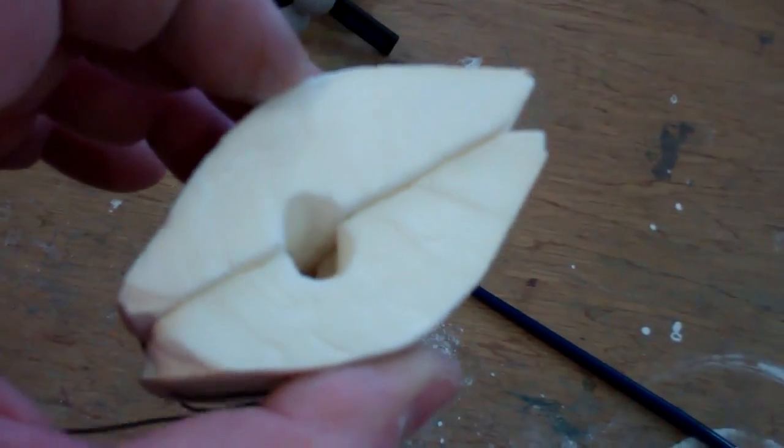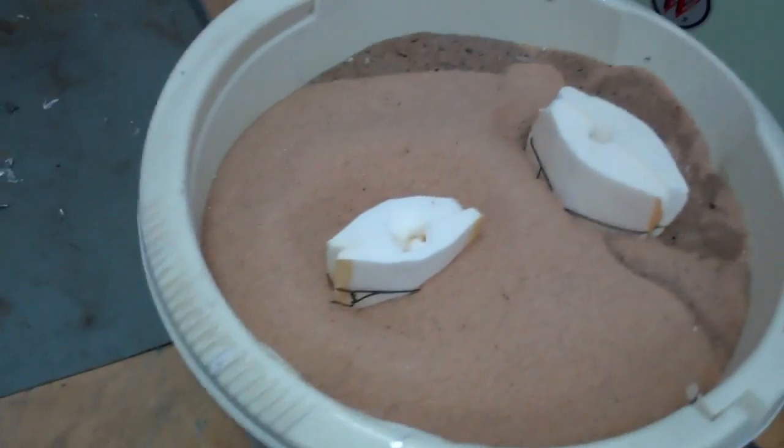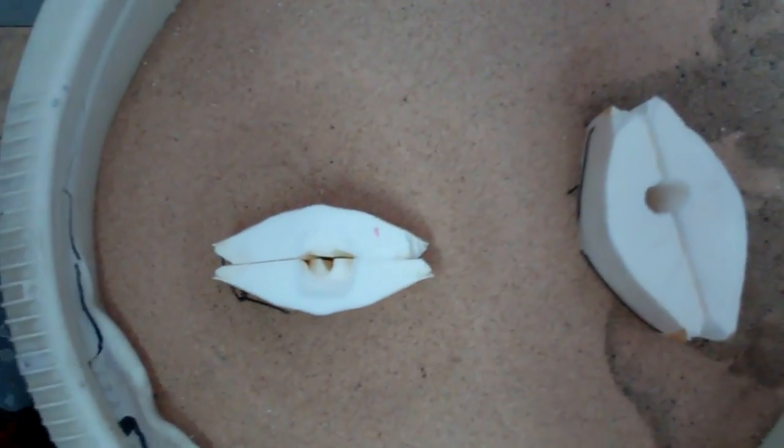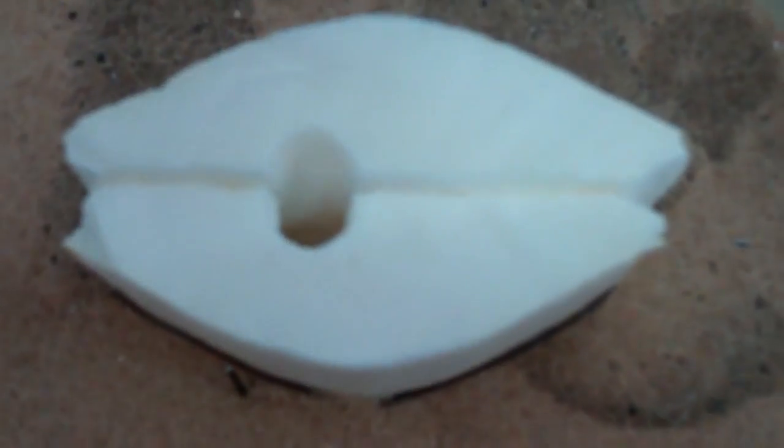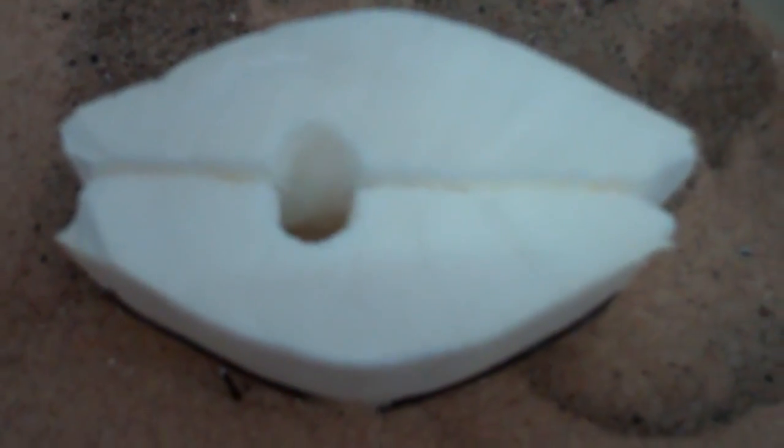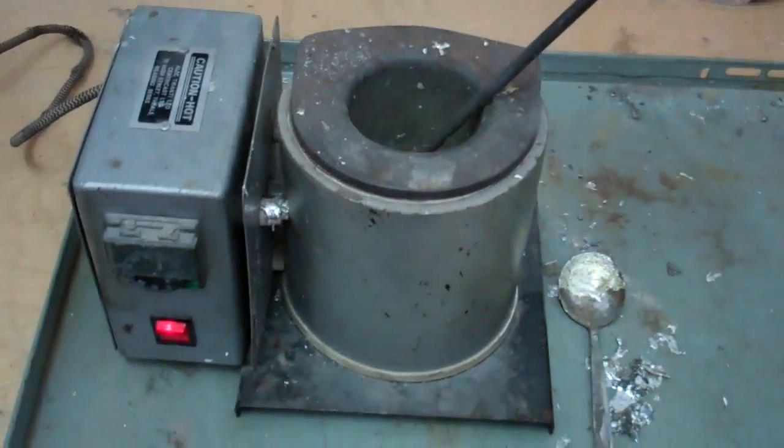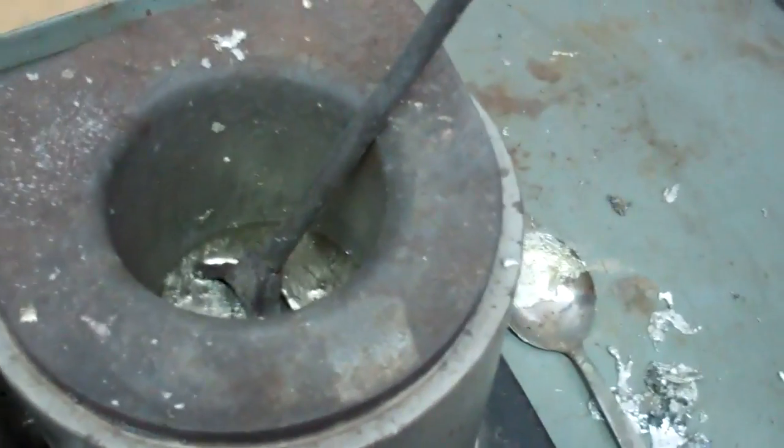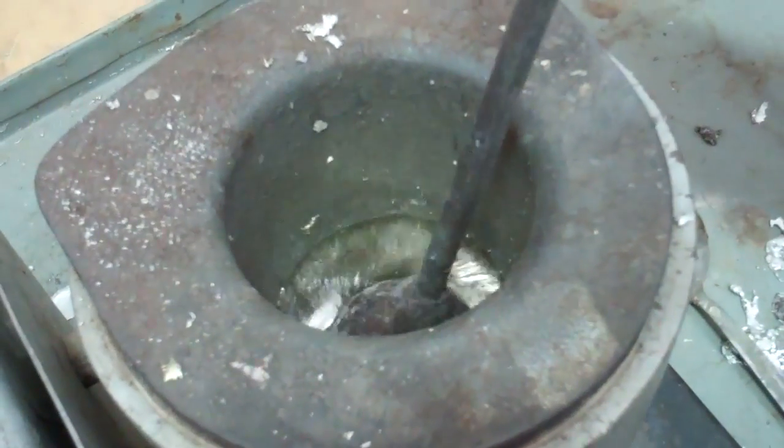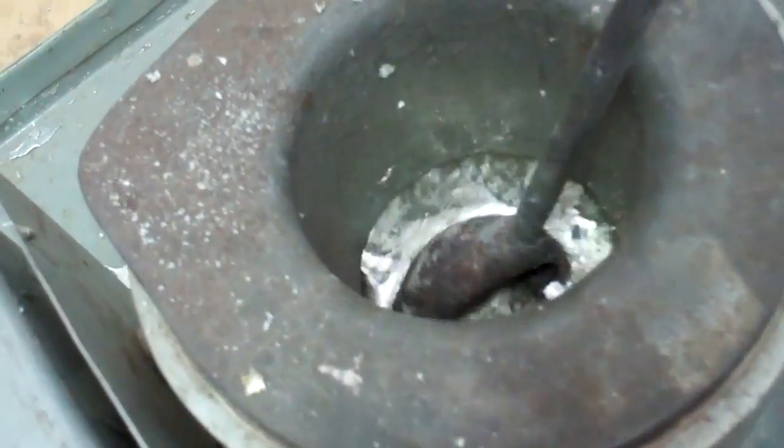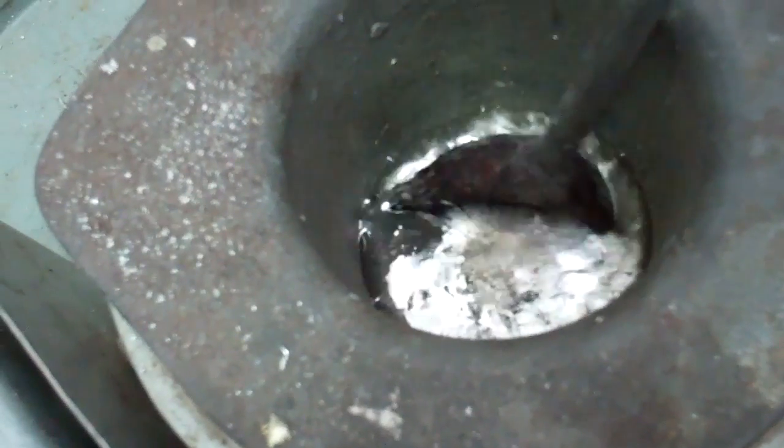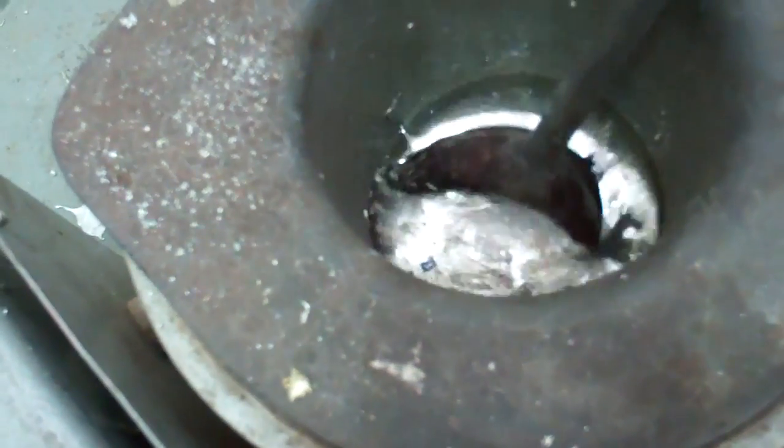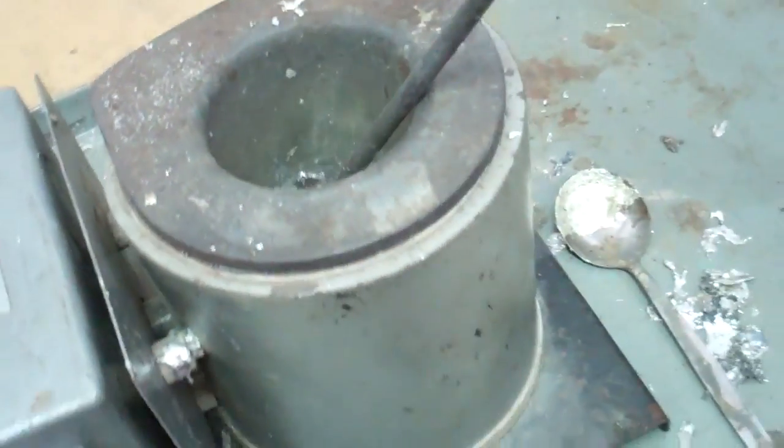The molds are now set up in a bucket of sand. You can see we've got a substantial pour hole in this one and a reasonable hole in this one. We'll be casting from the pewter melting pot. The metal is just coming up to casting temperature and we're just about ready to pour.